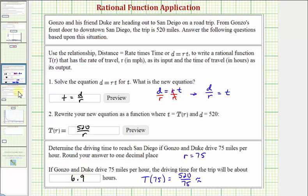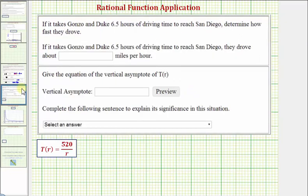Let's go to our next question. Now we're told, if it takes Gonzo and Duke 6.5 hours of driving time to reach San Diego, determine how fast they drove. Notice that 6.5 hours is the function value T of r. So we're given T of r equals 6.5, and we want to find r, the driving rate in miles per hour. Let's go ahead and work this out below.